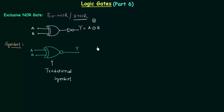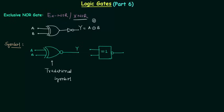We also have an IEEE symbol for the XNOR gate. It looks like a box with 'equals to 1' written inside and a small bubble at the output. The two inputs and the output are shown. This is the IEEE symbol.